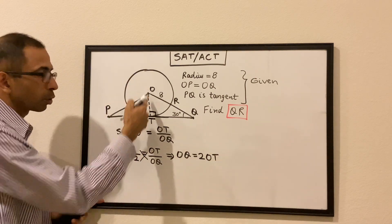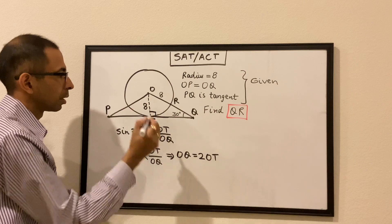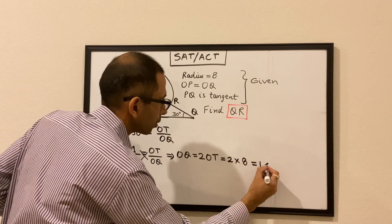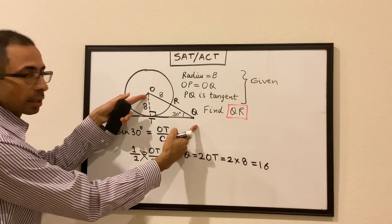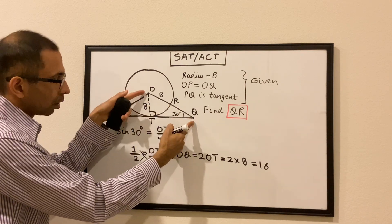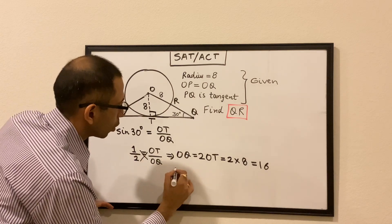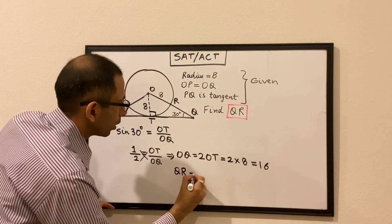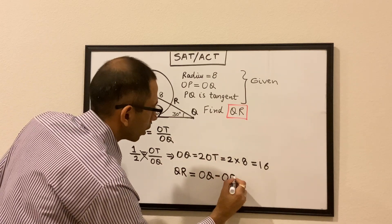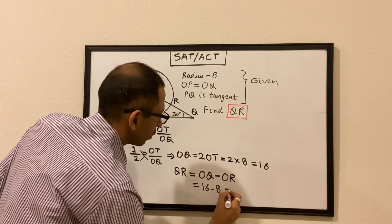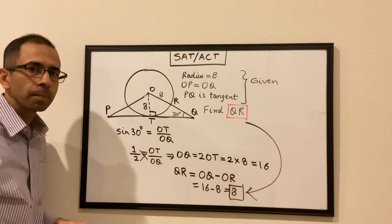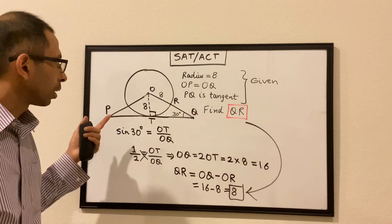We know OT is also the radius of the circle, hence OT is also 8. So OQ becomes 2 times 8, which is 16. The length of OR is given as 8, hence QR equals OQ minus OR, which is 16 minus 8, which is 8. The length of QR is 8.